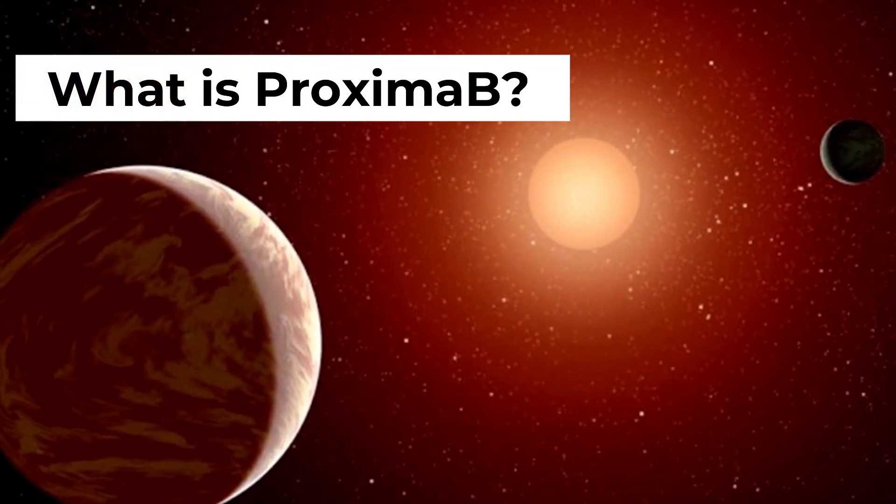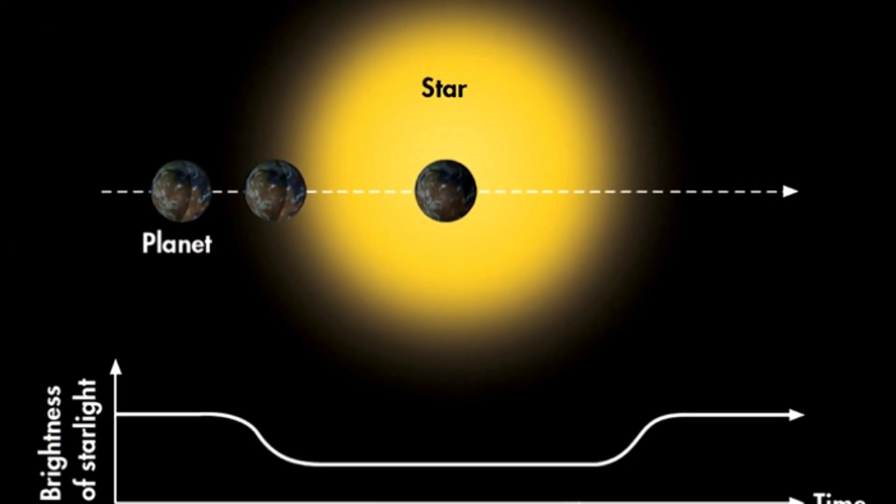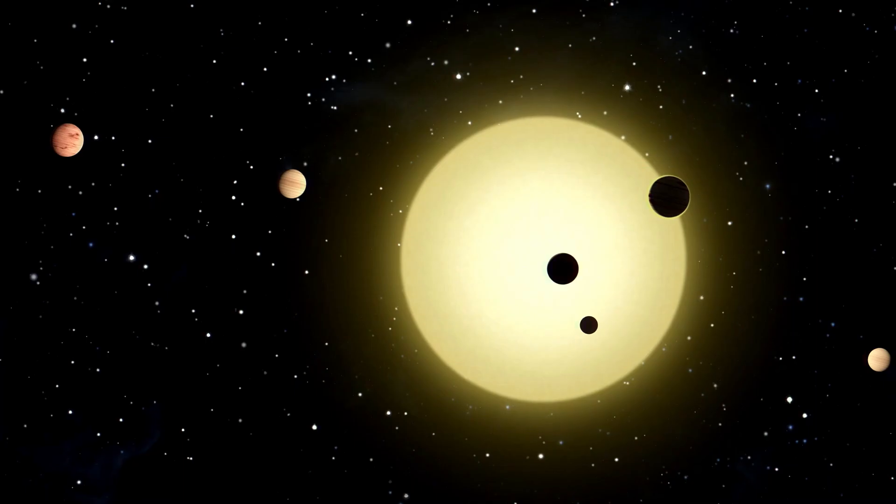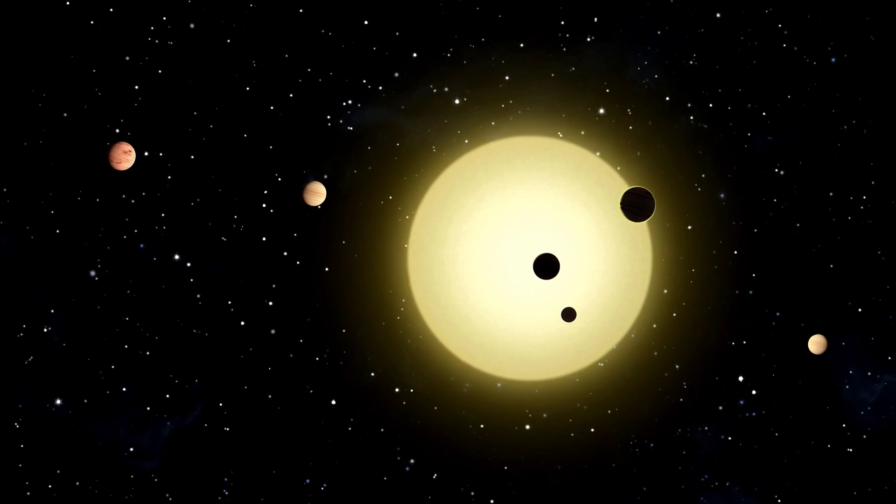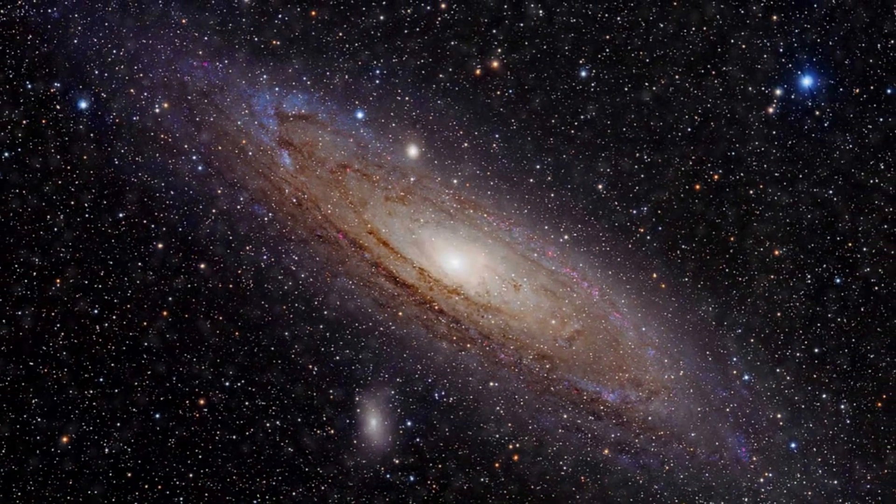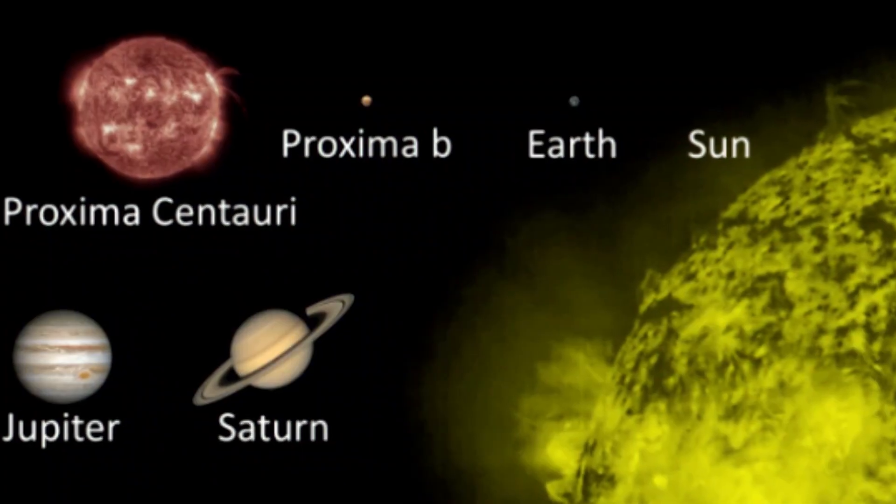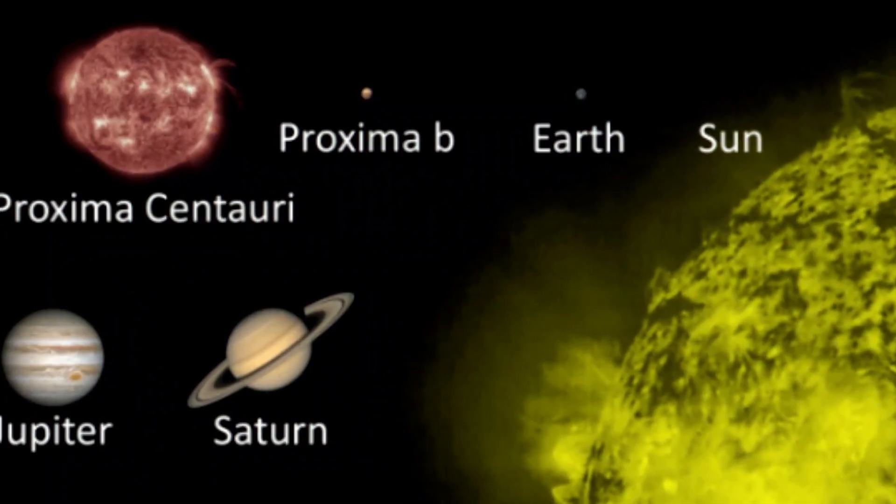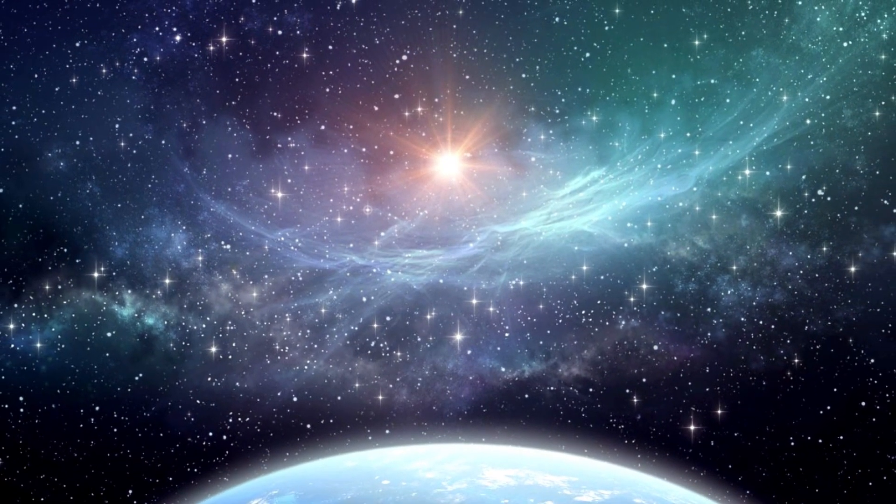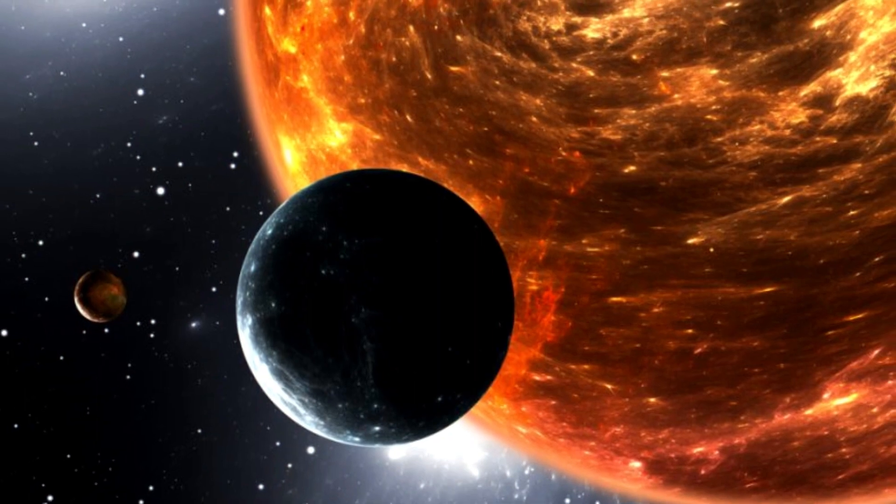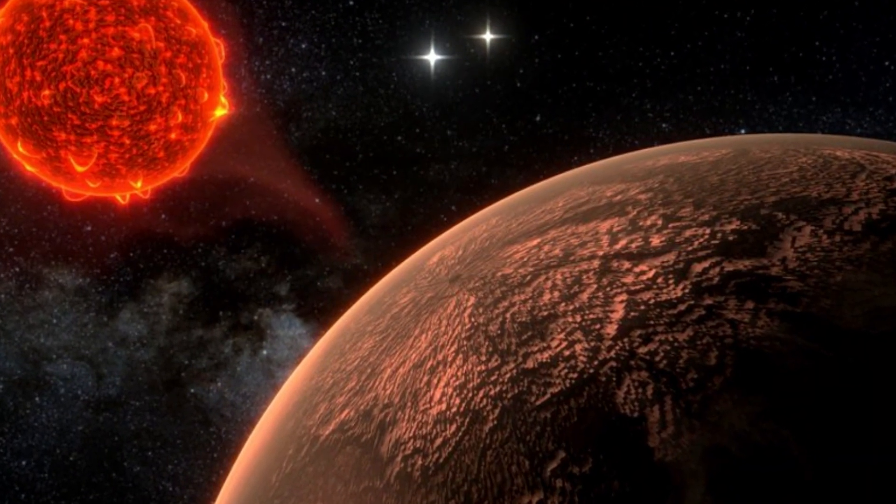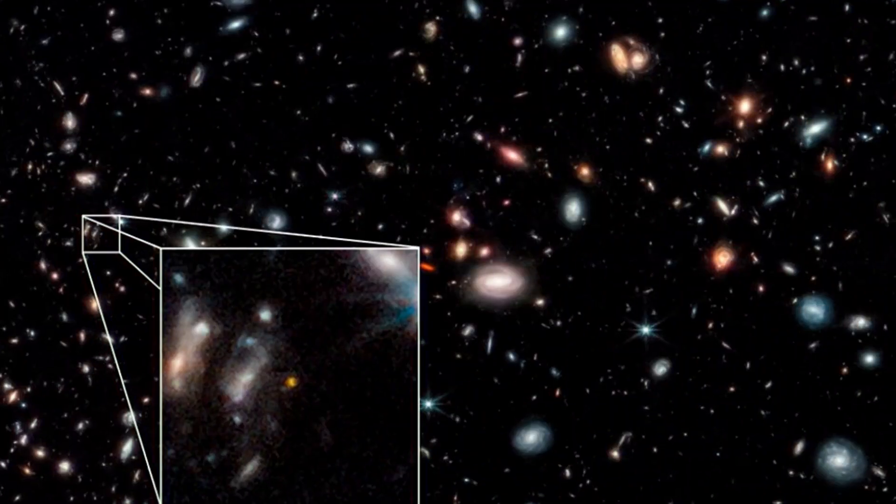What is Proxima b? Proxima b is a planet located in the Proxima Centauri star system, which is the closest star system to our own. The planet is classified as a super-Earth, meaning it is larger than Earth but smaller than Neptune. It orbits within the star's habitable zone, which is the range of distances from a star where the conditions are just right to support liquid water on the planet's surface. The discovery of Proxima b is significant for a few reasons.